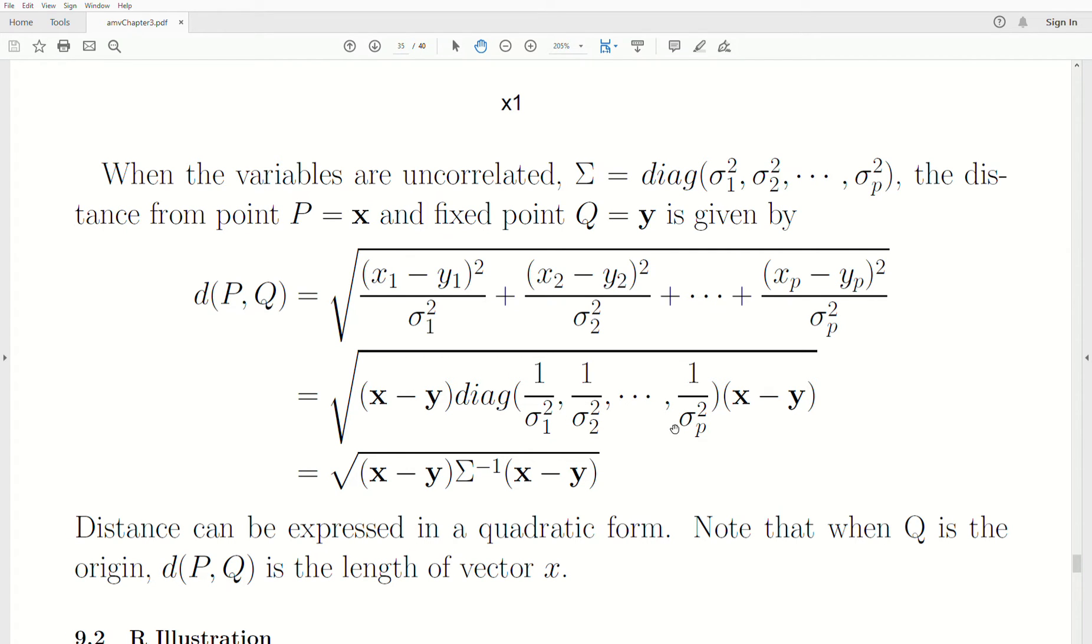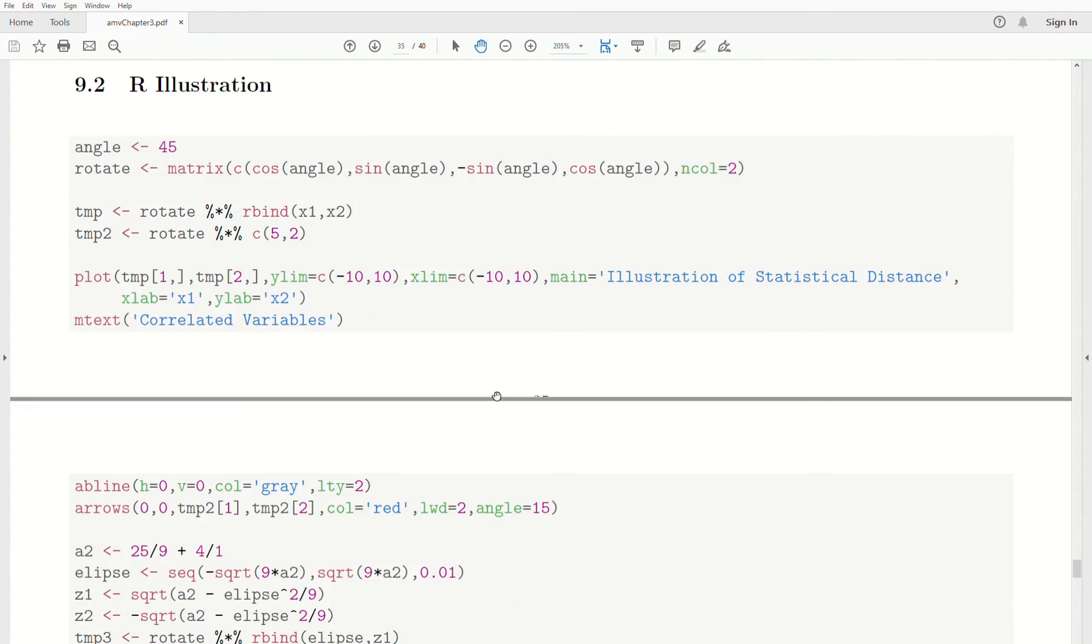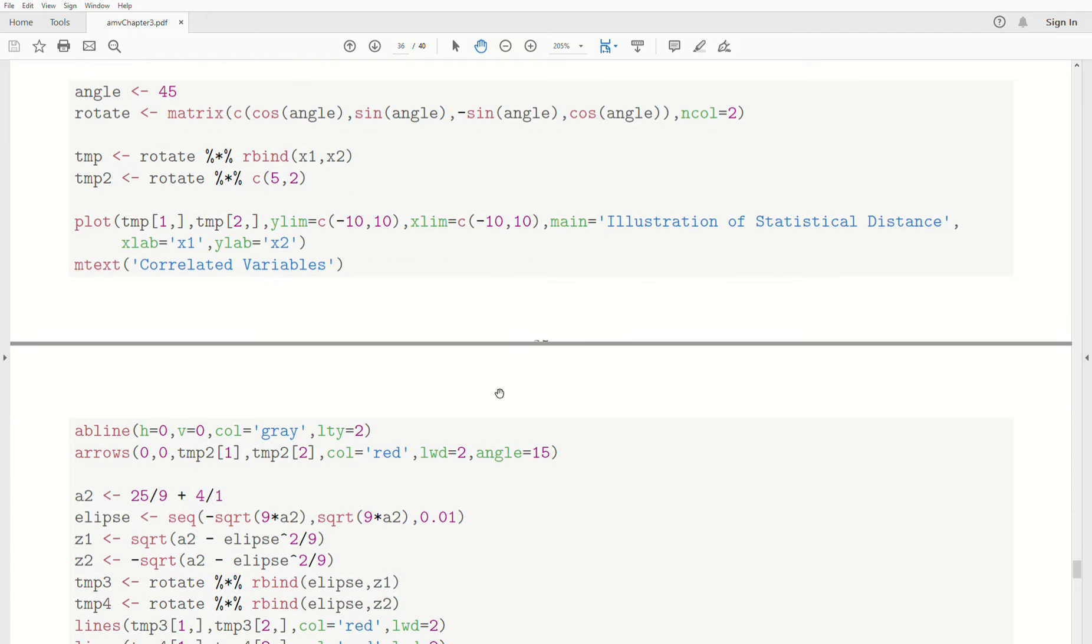But notice it's one over the variances, which is actually the inverse of the variance-covariance matrix. So this statistical distance can be expressed in quadratic form, incorporating the variance-covariance matrix, or one over it. Now, remember the off diagonals are zero here. So how do we look at it when there is covariance?